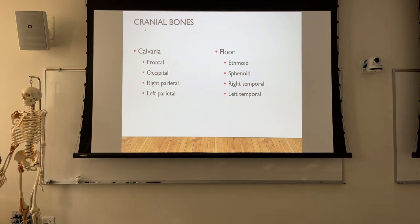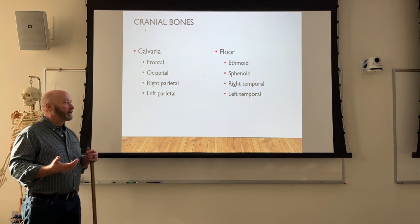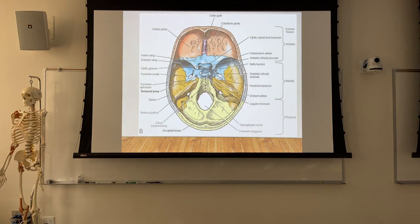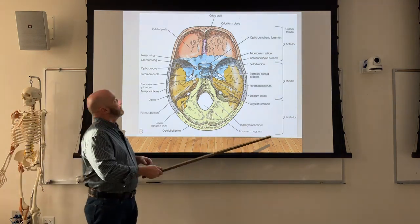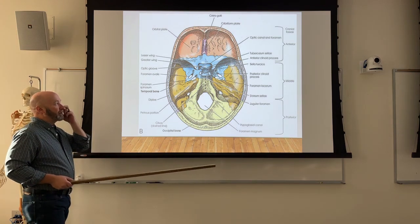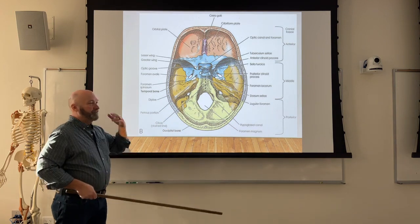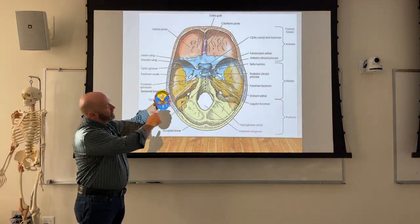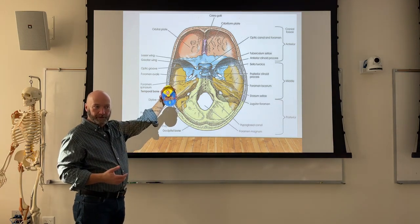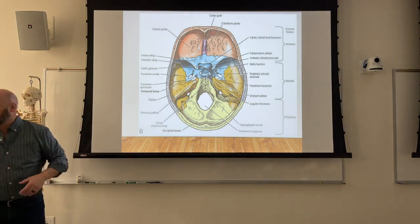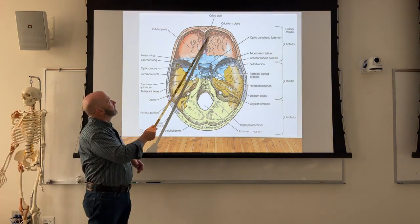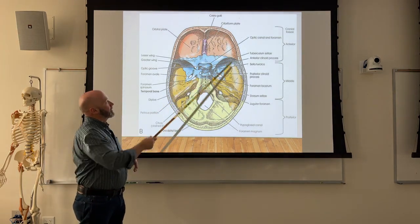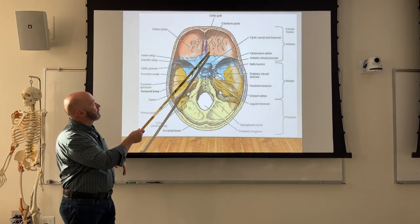Cranial bones: we've got the upper portion — frontal, occipital, and parietal bones — and the floor is formed, really on the inside, by the ethmoid, sphenoid, and right and left temporal bones. The thing sticking up right at the top is the very upper portion of the ethmoid bone, and it's what we call the crista galli. It rises up from the cribriform plate — the horizontal portion — to form that little point. You can't really see the optic canal because it's behind the sphenoid bone in this view.